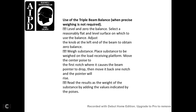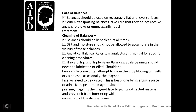Using the Triple Beam Balance when precise weighing is not required: level and zero the balance by selecting a flat and level surface; adjust the knob at the left end of the beam to obtain zero balance. Place the substance to be weighed on the load-receiving platform. Move the center poise to the first notch until the main pointer drops; move it back one notch so the pointer will rise. Read the results as the weight by adding the values indicated by each poise.